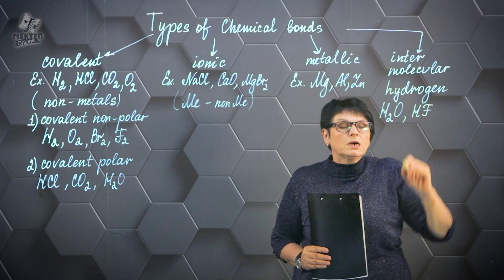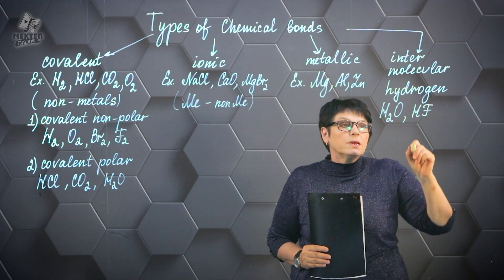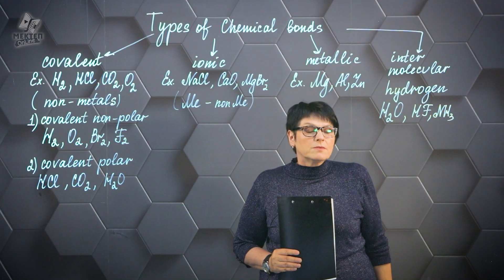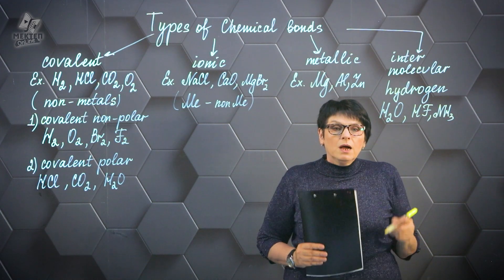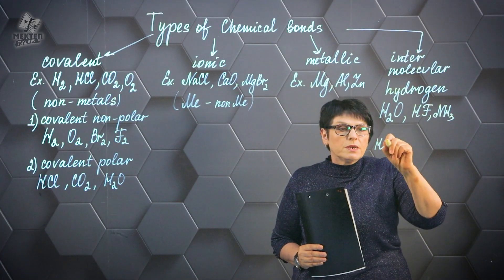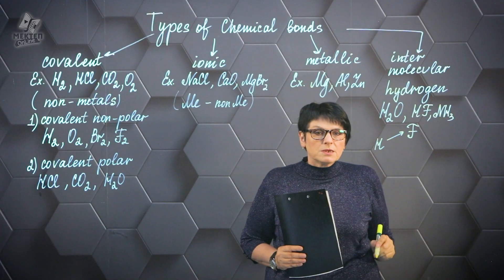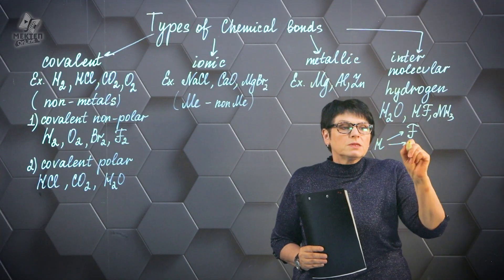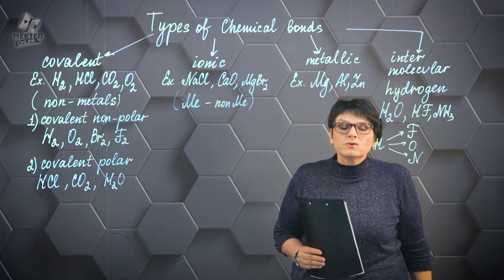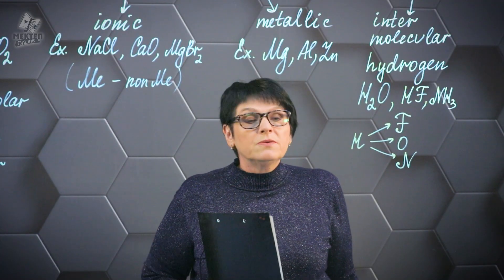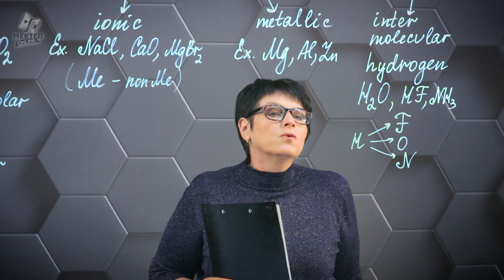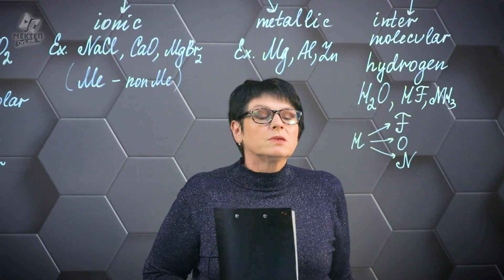Similarly, in hydrogen fluoride and hydrogen oxygen, within the molecule the polar bond is covalent, but between the molecules it is hydrogen bonding. The same applies to ammonia — inside the molecule it is covalently polar, between the molecules it is hydrogen bonding. Hydrogen bonding occurs when there is hydrogen combined with the most electronegative elements: fluorine, oxygen, or nitrogen. Hydrogen bonding plays a huge role in the formation of protein molecules, DNA, RNA, and other very important molecules.